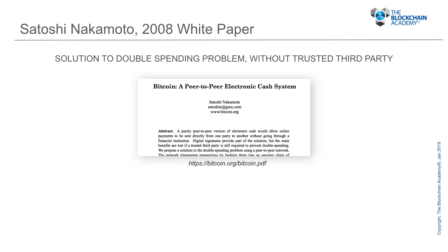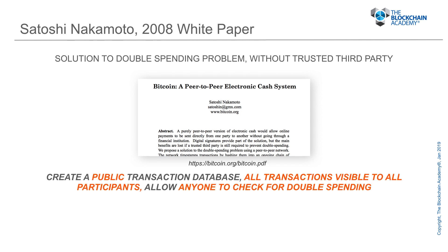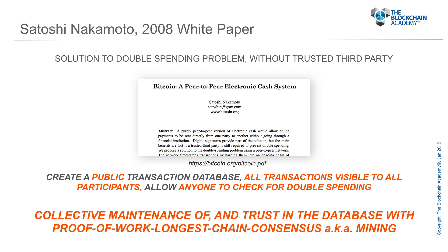Satoshi Nakamoto found a solution to the double-spending problem without intervention of a trusted third party. In his 2008 white paper, he describes his solution: create a public transaction database in which all transactions are visible to all participants, and allow anyone to check new transactions for double spending. The real invention of Satoshi Nakamoto resides in the way this database is collectively maintained and how collective trust in this database is created.